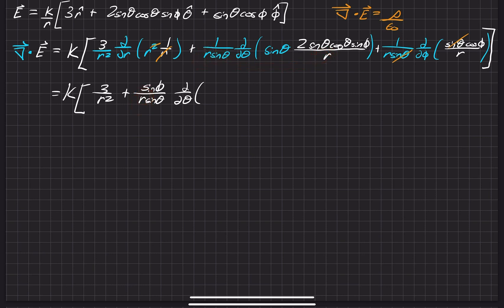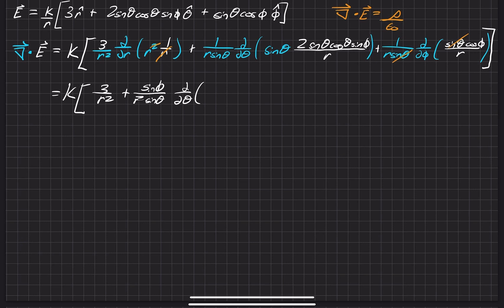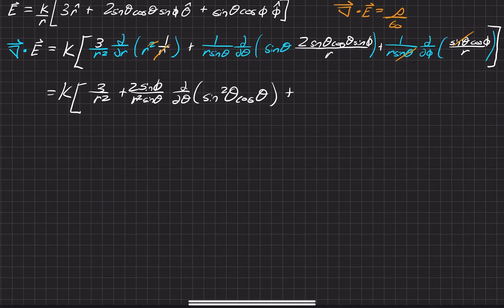Now that we pulled out the sine phi and the R, we're just left with this. We can go ahead and combine these two sine squareds, and pull out this 2 out in front. Now we have a sine squared of phi times cosine of phi. And on this last one, we have one over R squared — we pull out that one over R — and just a partial with respect to phi of cosine phi, which is negative sine phi. We move this negative sine out in front.